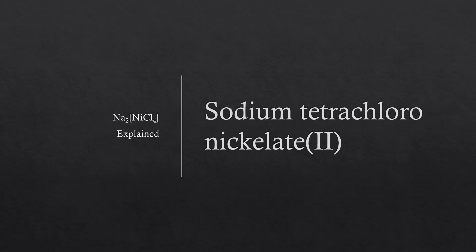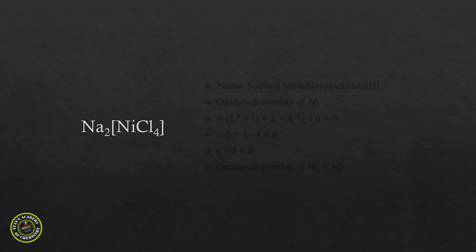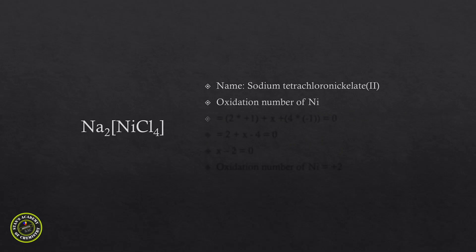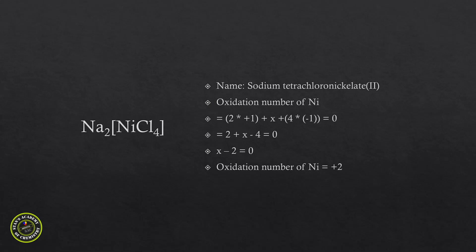The name is sodium tetrachloronickelate(II). The name ends in -ate because the complex is negatively charged, so we name sodium first, then tetrachloro — when chlorine comes within the coordination sphere, the ending is -o. Therefore tetrachloronickelate, because the complex is negatively charged. The oxidation number of Ni is plus 2.